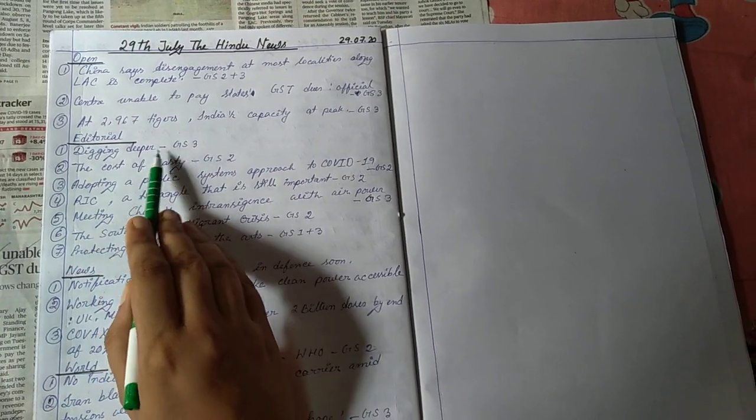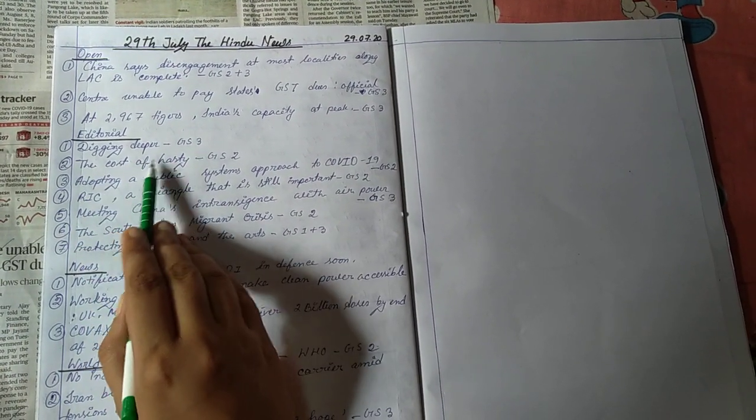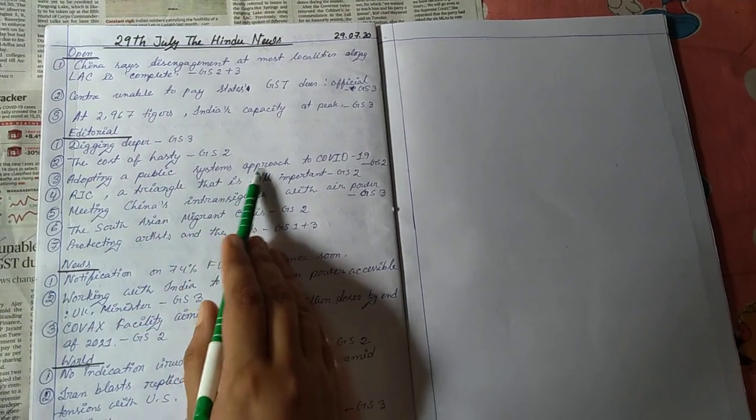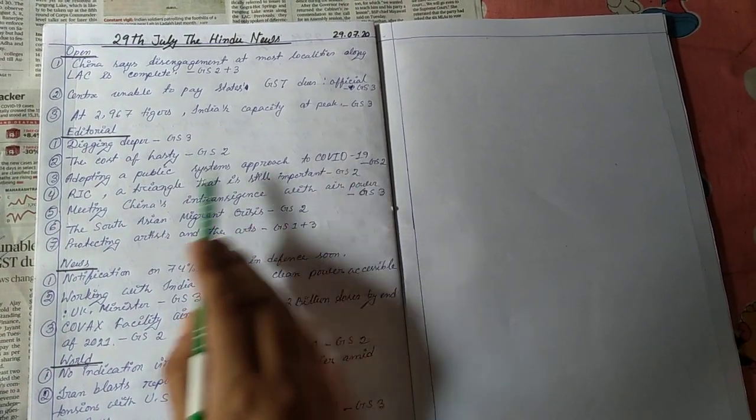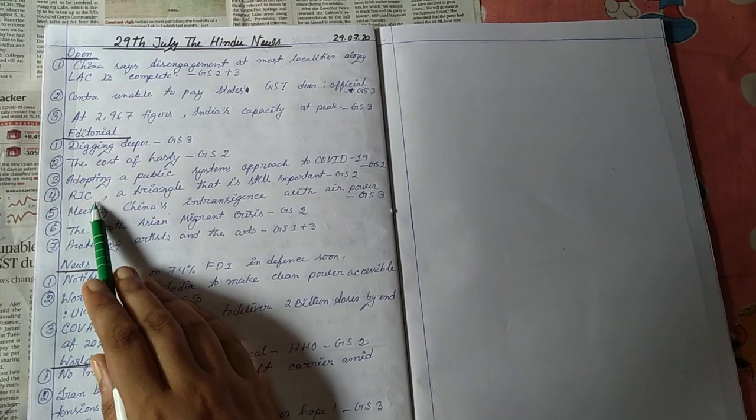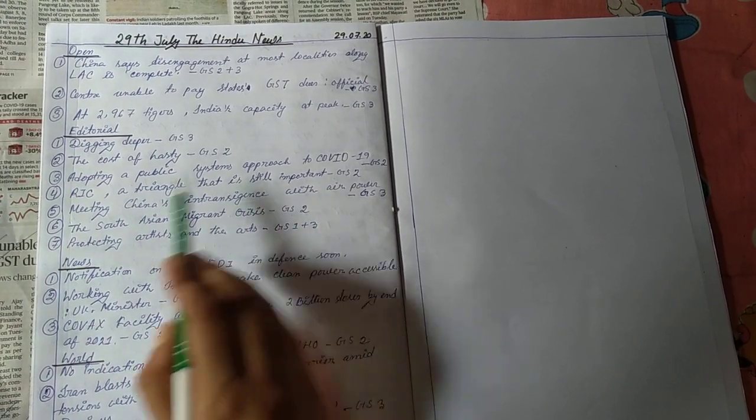Then the editorial section, digging deeper, GS paper 3, the cost of hasty, GS paper 2, adopting a public system approach to COVID-19, GS paper 2, RIC, Russia, India, China, a triangle that is still important, GS paper 2.